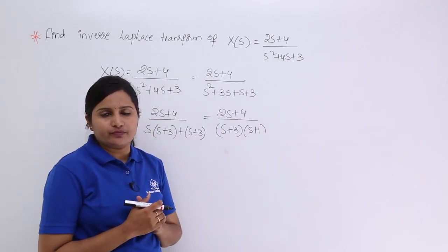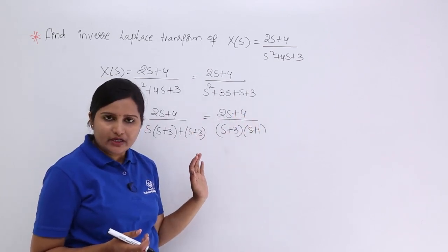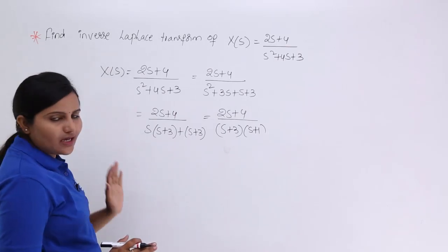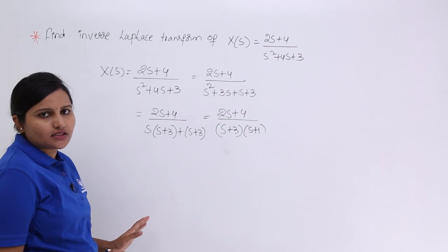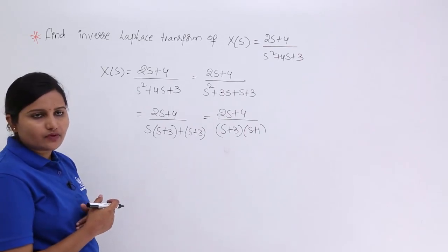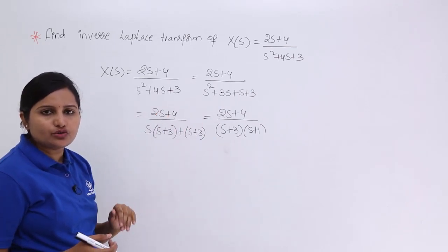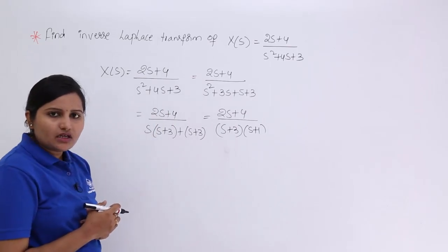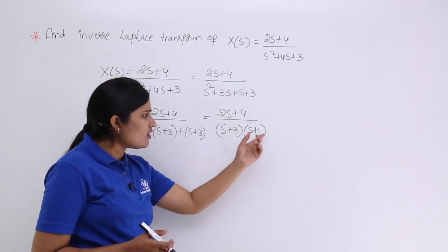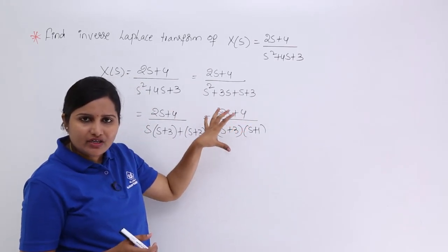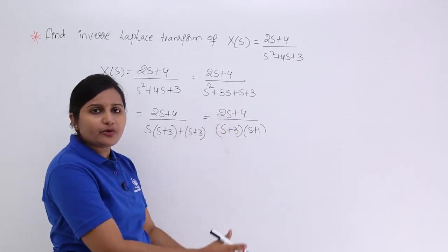Now what is the further step? We need to cancel the denominator factors using the numerator if possible, because what we really want is not X(s) itself. Up to now we have only modified the spectrum equation. We have not yet entered into the inverse Laplace transform. To apply the inverse Laplace transform, this equation must be in the form of a particular standard transform; otherwise you need to go back to the definition and follow the actual process of the inverse transform equation.